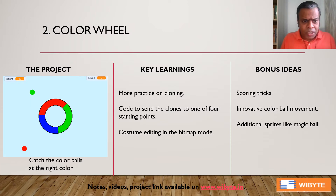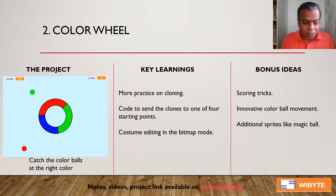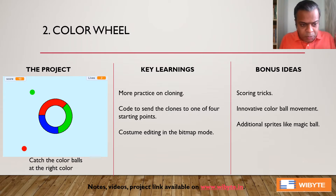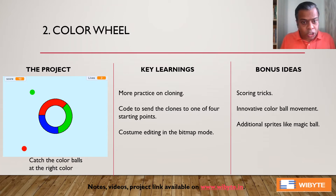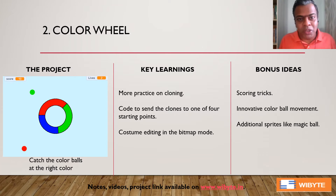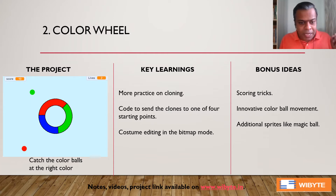The next game, which solidifies the concept of cloning further, is Color Wheel — actually a popular game. There's a wheel you can rotate using the arrow keys, and colored balls come from different corners. You must make sure the right colored ball goes to the matching color on the wheel — green to green, red to red, blue to blue. All the balls are clones of a single sprite, so students get more practice on cloning and learn how to write code so that clones start from one of the four corners. This can be done in multiple ways using lists or conditions.